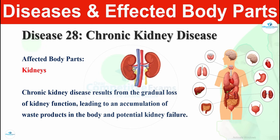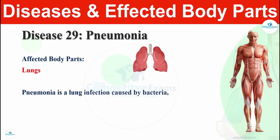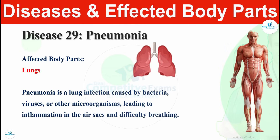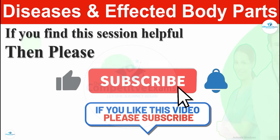Disease number twenty-nine is pneumonia. Pneumonia affects the lungs. Pneumonia is a lung infection caused by bacteria, viruses, or other microorganisms, leading to inflammation in the air sacs and difficulty breathing. Pneumonia occurs due to bacteria and viruses and affects the lungs and respiratory system. If you found this session helpful, please support us by liking, subscribing, and sharing your comment.